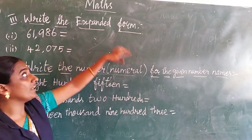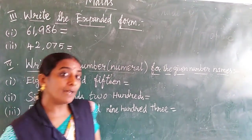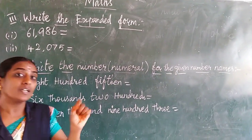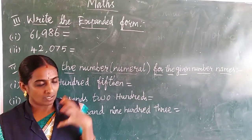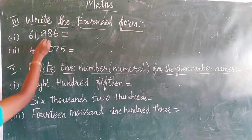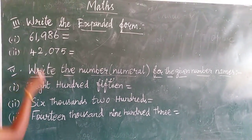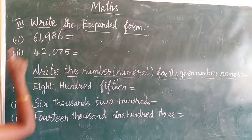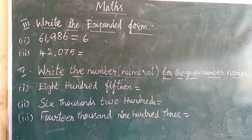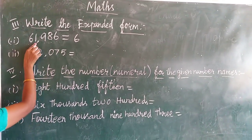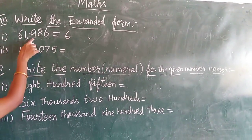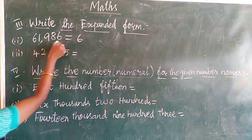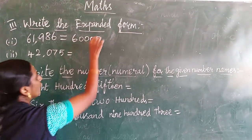We go to the next one — write the expanded form. What is expanded form? In separate place value. The number is 15. In the previous lesson, forty means four-zero, forty. Like this we will separate the place value. First we are going to the highest place value only: one, ten, hundred, thousand, ten-thousand. Ten-thousand is the highest value, so six is the highest place value, so we will start from six.